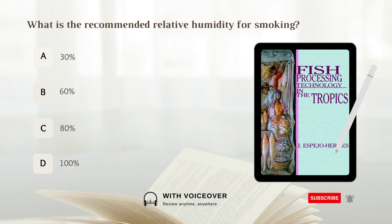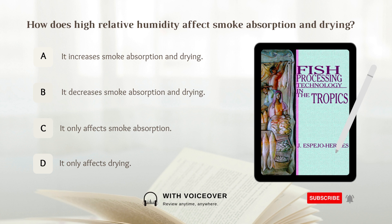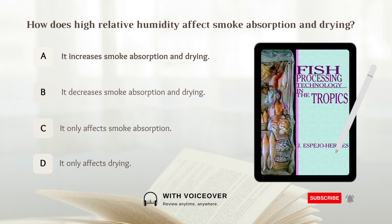What is the recommended relative humidity for smoking? A. 30%. B. 60%. C. 80%. D. 100%. Answer: B. 60%. How does high relative humidity affect smoke absorption and drying? A. It increases smoke absorption and drying. B. It decreases smoke absorption and drying. Answer: A. It increases smoke absorption and drying.